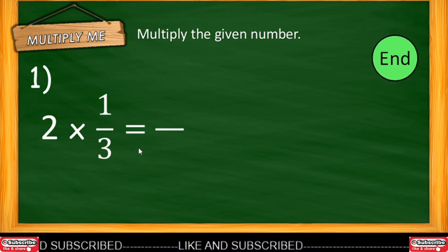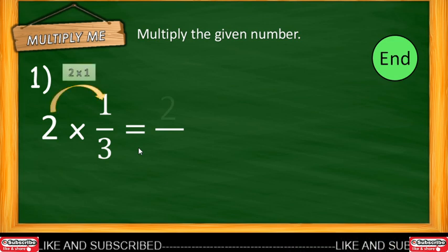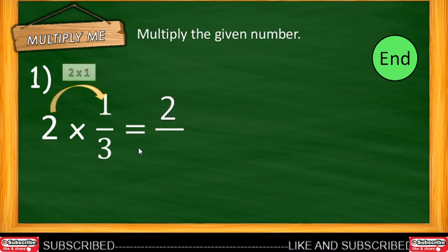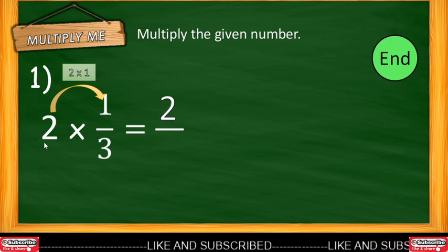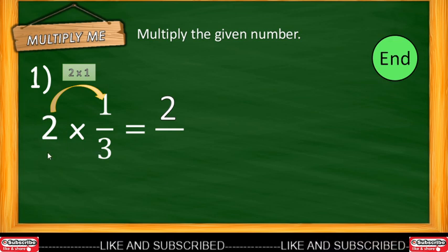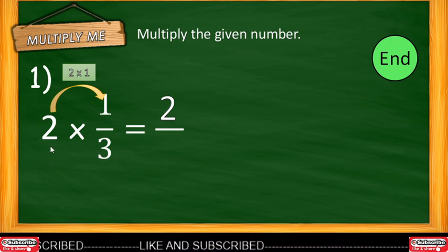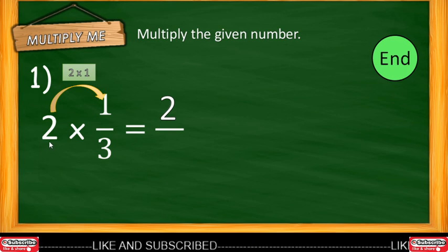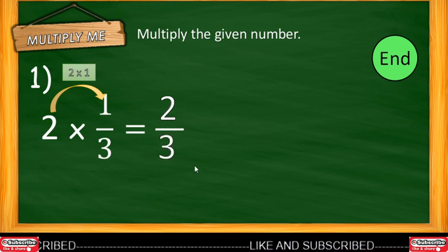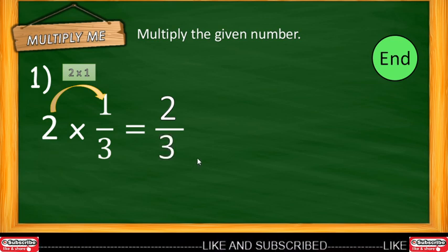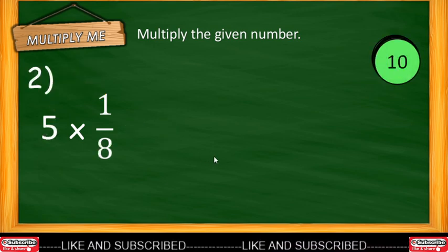Time is up. Let's reveal the answer. So, 2 multiplied by 1 — the numerator answer is 2. Since 2 has no denominator, the denominator of 2 is 1. So 1 times 3 is 3. The answer is two-thirds. That's example number 2.